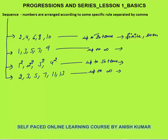The second sequence is 1, 3, 5, 7, 9 up to infinite terms. In this second sequence, the number of terms are infinite, so this is an infinite sequence. The logic behind this sequence is that they are odd numbers starting from 1 — a sequence of odd numbers starting from 1 till infinity.